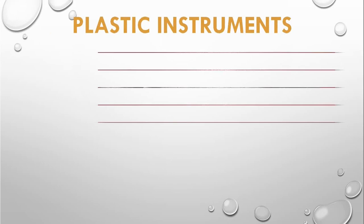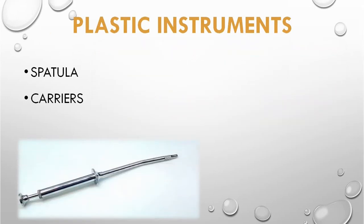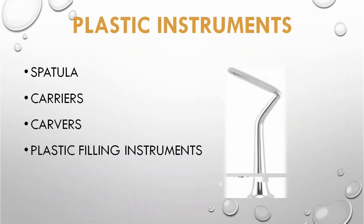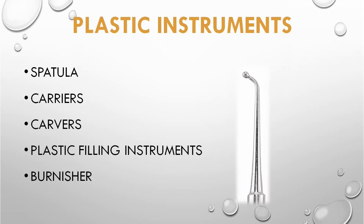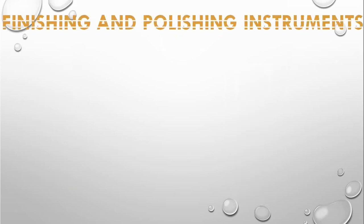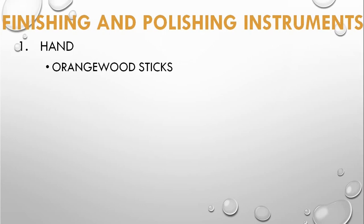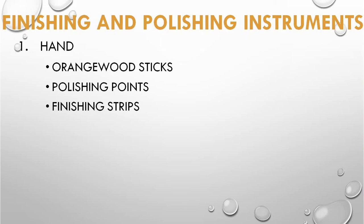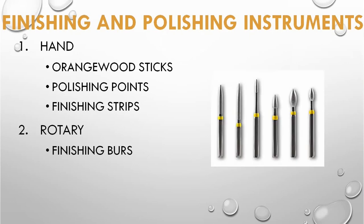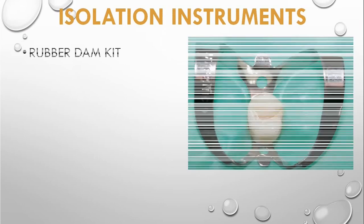Plastic instruments include spatulas, carriers, carvers, plastic filling instruments, and burnishers. Finishing and polishing instruments are divided into hand and rotatory instruments. Hand instruments include orangewood sticks, polishing points, and finishing strips. Rotatory instruments include finishing burs, stones, rubber cups, and discs.